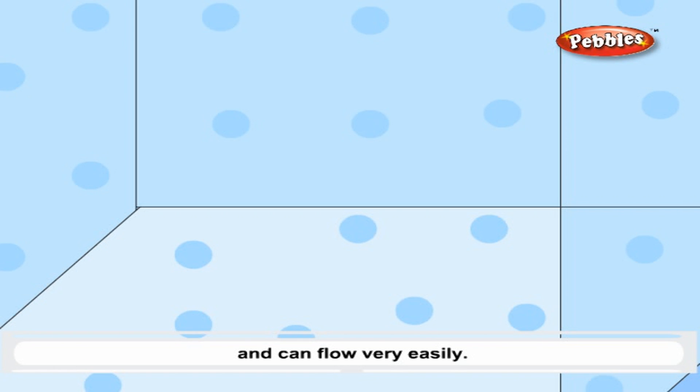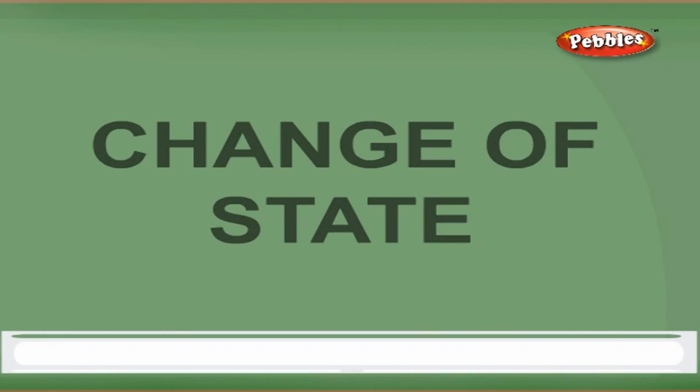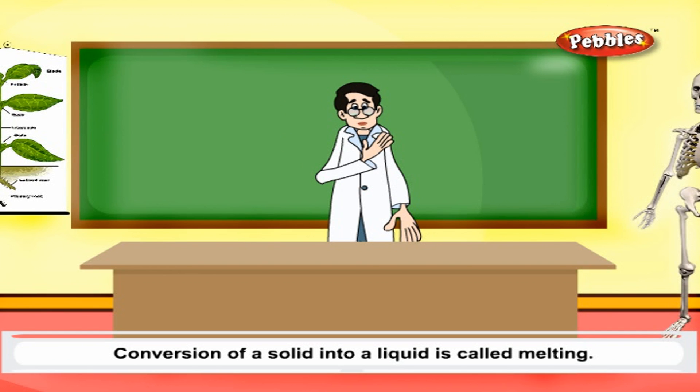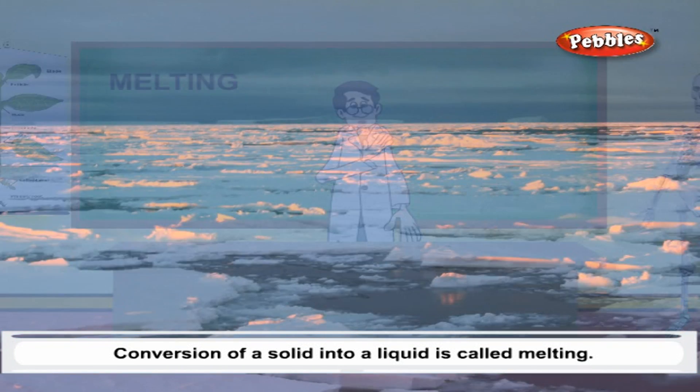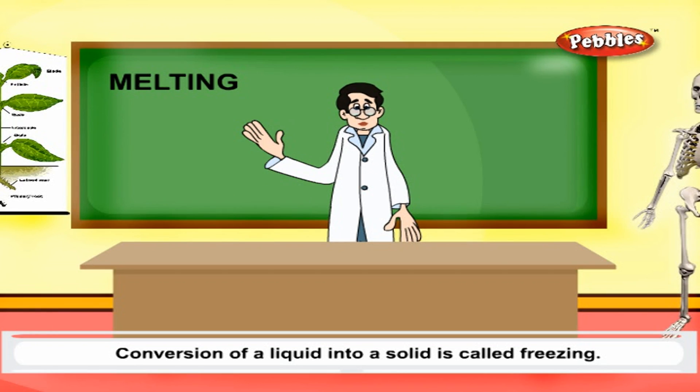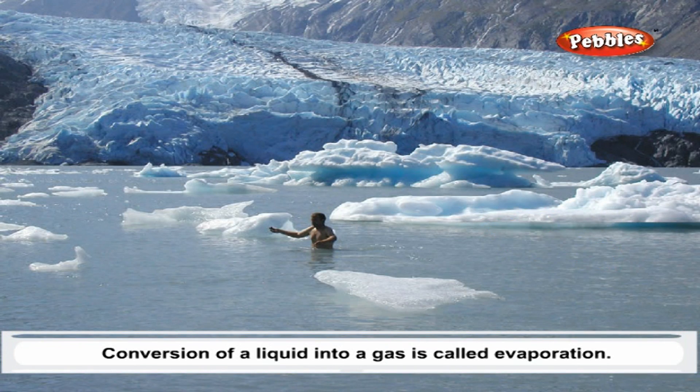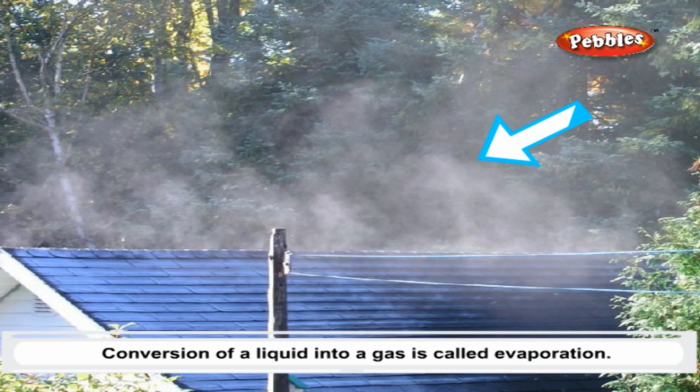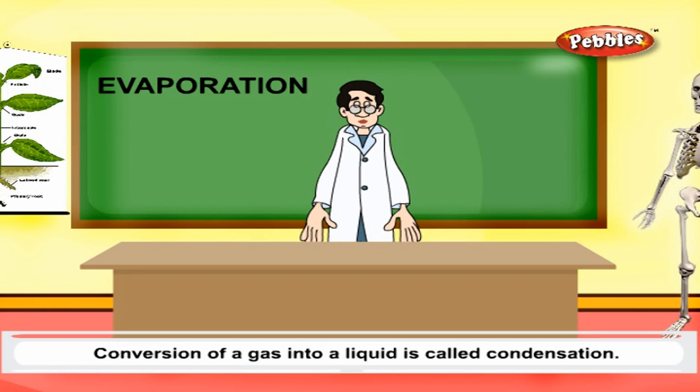Change of state. Conversion of a solid into liquid is called melting. Conversion of a liquid into a solid is called freezing. Conversion of a liquid into gas is called evaporation. Conversion of a gas into a liquid is called condensation.